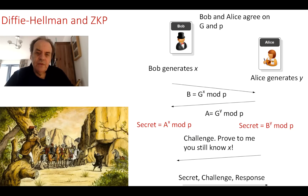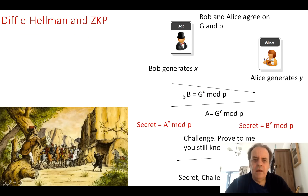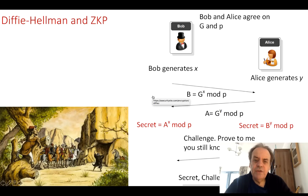Now suppose Alice wants to challenge Bob to show that he knows the value of x. In this case, we want Bob to demonstrate or prove knowledge of x through a challenge-response protocol.